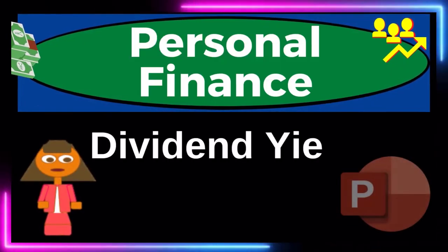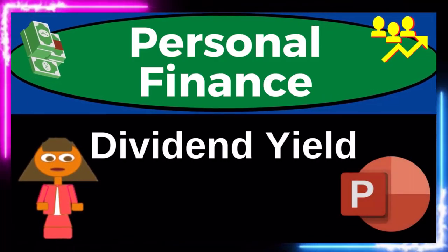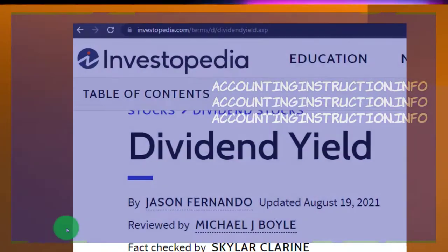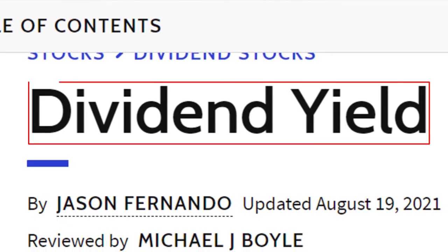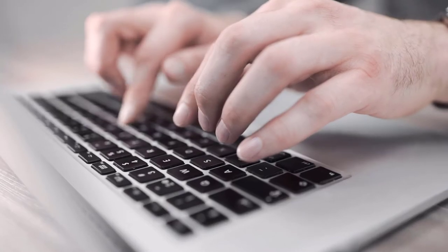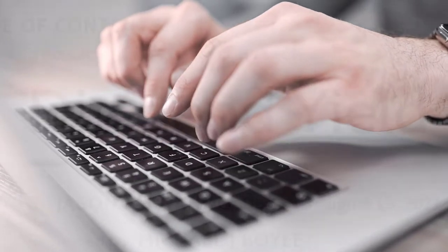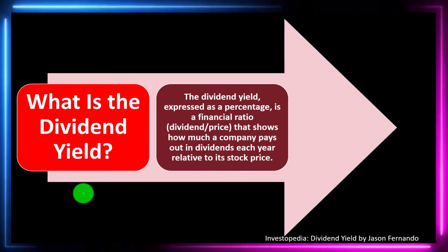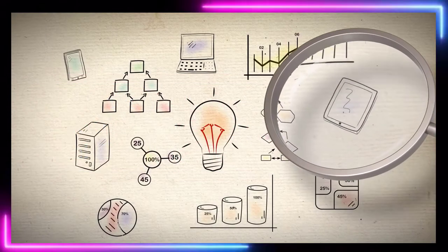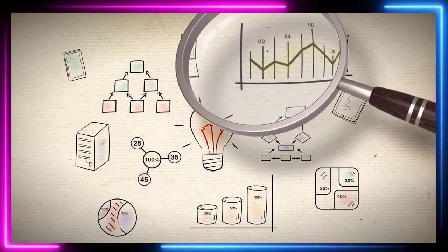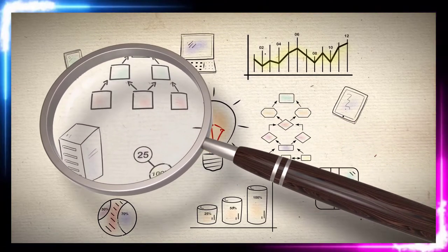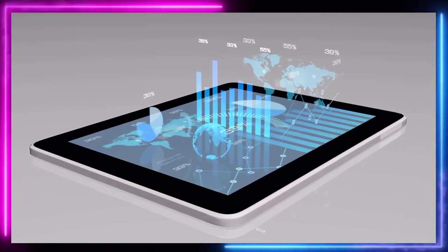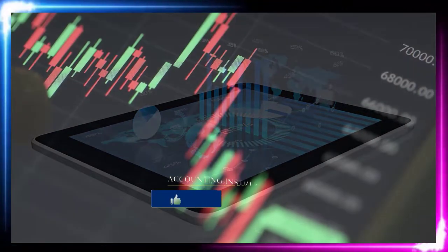This is a personal finance PowerPoint presentation on dividend yield. Prepare to get financially fit by practicing personal finance. Most of this information comes from Investopedia, which you can find online — take a look at the references for further research. By Jason Fernando, updated August 19, 2021. In prior presentations we've been taking a look at investment goals, investment strategies, and investment tools, keeping in mind the two major categories of investments: fixed income (typically bonds) and equity (typically common stock).